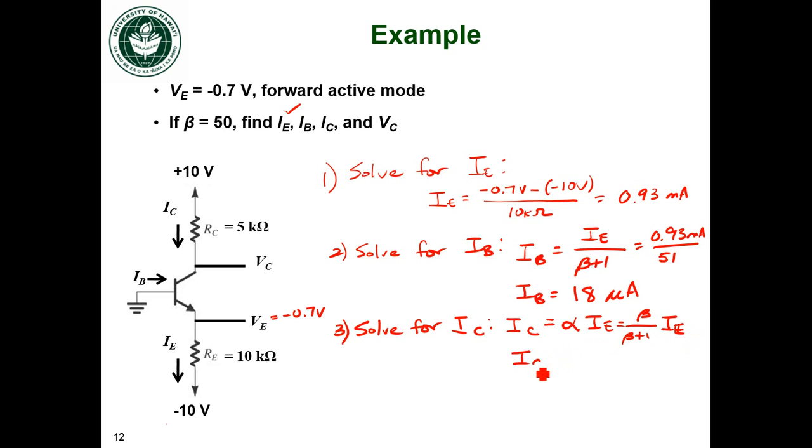And so my collector current is 0.91 milliamps. That makes sense from a KCL point of view because my collector current is a little bit less than my emitter current. And then when I add my collector current and my base current, it should be equal to my emitter current.